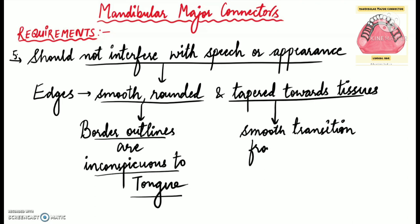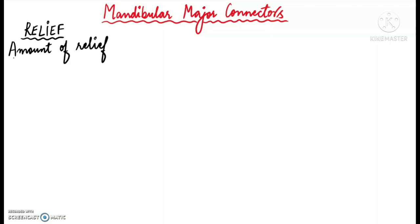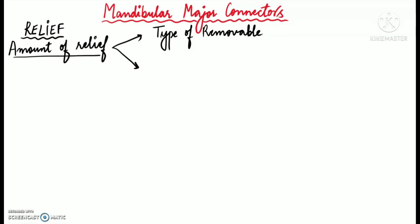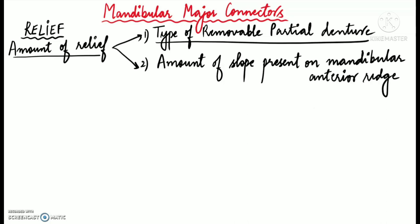Now we'll talk about relief. Relief is almost always required for mandibular major connectors between the rigid metal surfaces and the underlying soft tissues. The amount of relief required varies depending upon the type of removable partial denture and the amount of slope present on the lingual side of the mandibular anterior ridge.